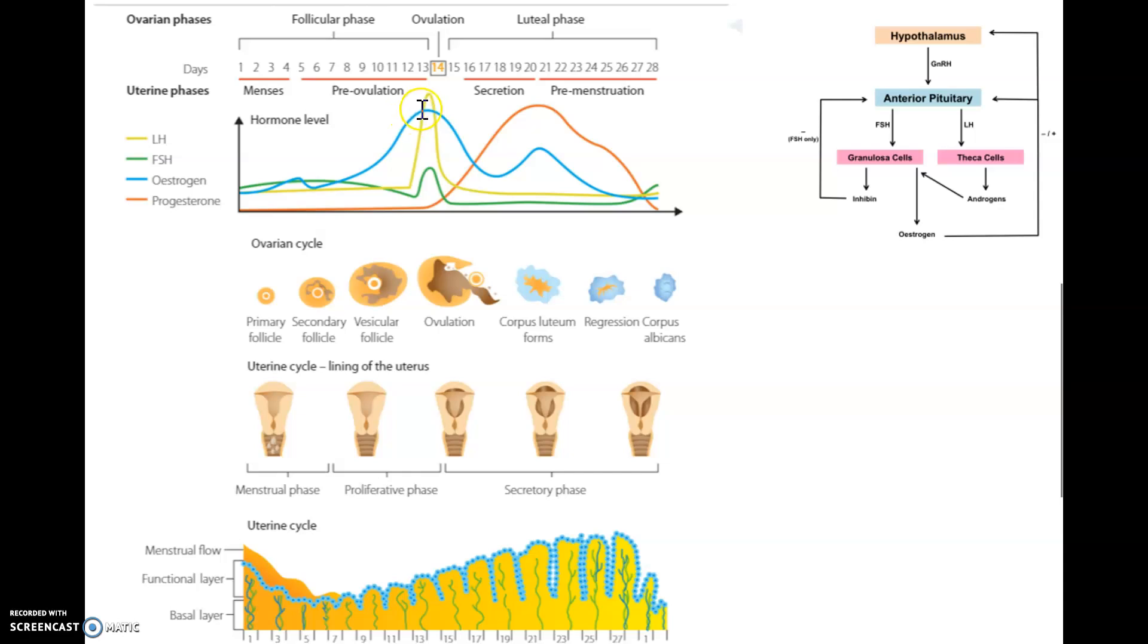Estrogen peaks right before day 14. When it peaks to such a high level, it actually goes back to the brain, and it increases the production of GnRH, FSH, and LH. You should be able to see the yellow LH surging at day 14, and also the surge in FSH at day 14. This response where a hormone is increasing the release of other two hormones is known as positive feedback.